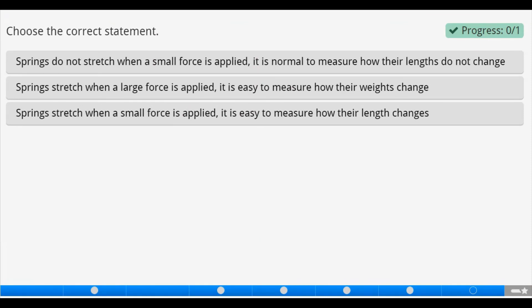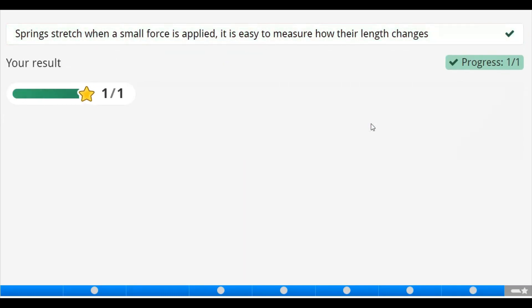So with that, let's have this summary for the day for us to be able to choose the correct statement. Now let's analyze these statements one then the other. Springs do not stretch when a small force is applied. It is normal to measure how their lengths do not change. The statement is wrong because springs always stretch when small forces are applied and their lengths will also change. Spring stretch when a large force is applied. It is easy to measure how their weights change. That is not true. That is false. Spring stretch when a small force is applied. Yes, it is easy to measure how their length changes. That is true with the use of extension. So let's pick it and check. That is it.